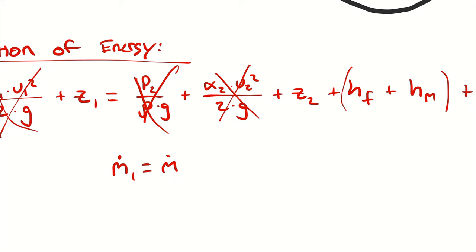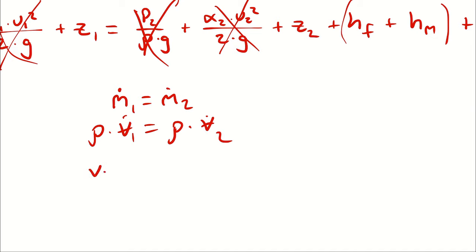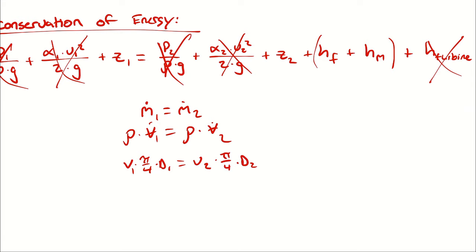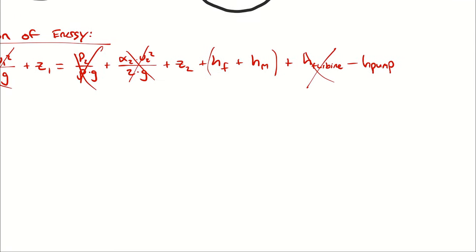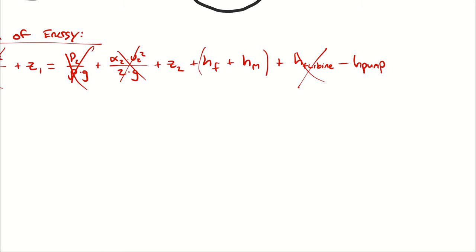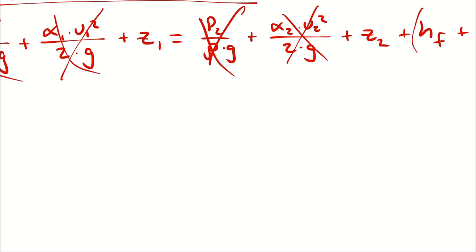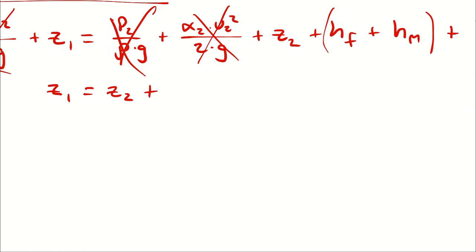If we have steady state analysis, that means mass flow rate at 1 equals mass flow rate at 2 for one inlet and one outlet. Since mass flow rate equals density times volumetric flow rate, and with constant density (incompressible flow), volumetric flow rate at 1 equals volumetric flow rate at 2. Since volumetric flow rate equals average velocity times cross-sectional area, and the cross-sectional area doesn't change, the average velocity must not change. So my simplification gives Z1 equals Z2 plus friction losses (both major and minor) minus the pump head.